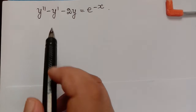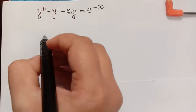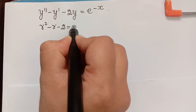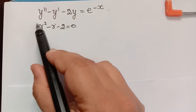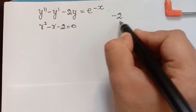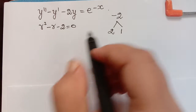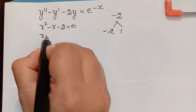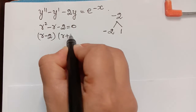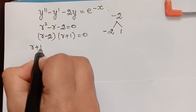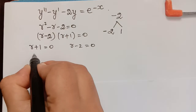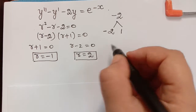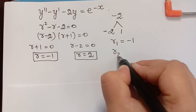We write the characteristic polynomial and equate it to 0: r² minus r minus 2 equals 0. Factorizing, this gives (r minus 2)(r plus 1) equals 0. So we get r equals minus 1 and r equals 2. We take r1 equal to minus 1 and r2 equal to 2 as the two distinct roots.